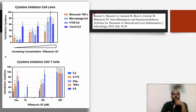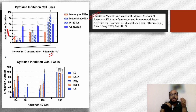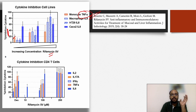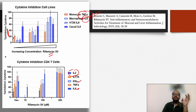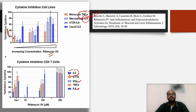A bar graph from this reference shows that with increasing concentration of rifampicin, there is increased inhibition of cytokines — including TNF-alpha, IL-8, IL-2, IL-17, interferon-gamma, and IL-6. The percentage inhibition of these inflammatory cytokines increases with increasing doses of rifampicin. The full article will be available in the description box.